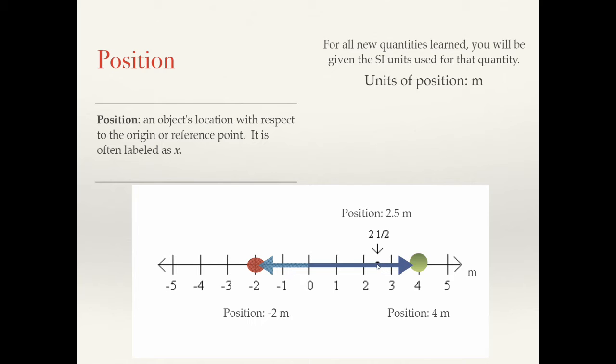Then I have here this two and a half, or 2.5 meter position. And this would be the arrow that shows how I got from the reference point to there. So position is a particular quantity. It seems to have some direction associated with it. And we'll get into that a little later.